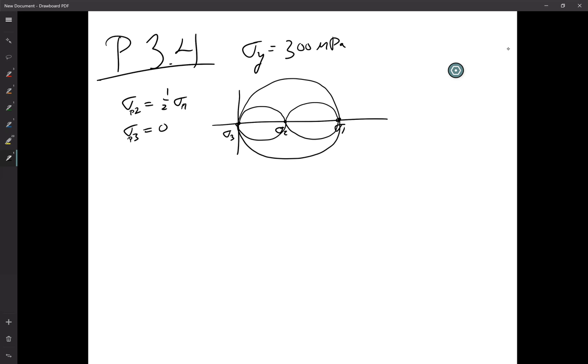So the Rankin criteria is basically that the maximum normal stress when it goes over top of the yield stress, it yields. So Rankin part A is simply that sigma 1 is greater than the yield stress.